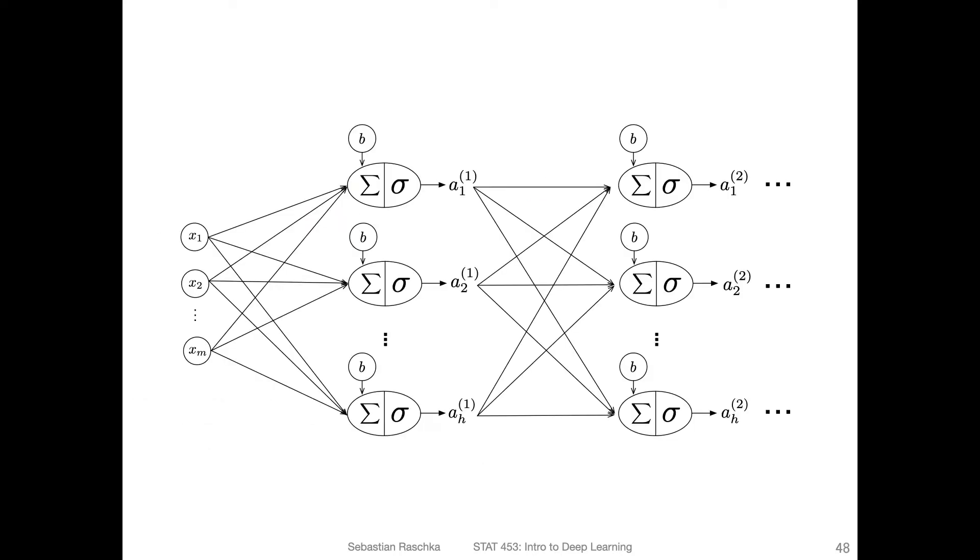What do I mean by fully connected or linear layer? If we have a multi-layer network like shown here, this part here would be a linear transformation if we don't consider the activation function.